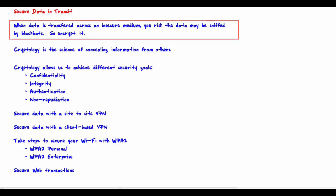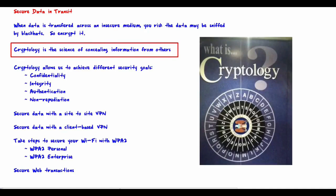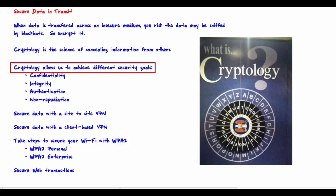Cryptology is the science of concealing information from others. In cryptology, we deal with plain text, also called clear text, which is data that can easily be read by anybody. We encrypt the data into ciphertext, which makes it difficult — hopefully very difficult — to read by others. Ciphertext can be decrypted to get back the original clear text.